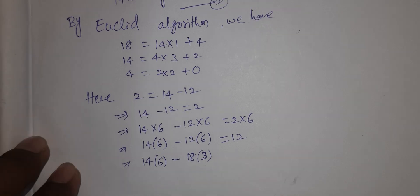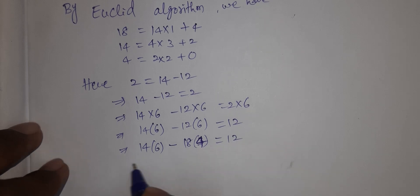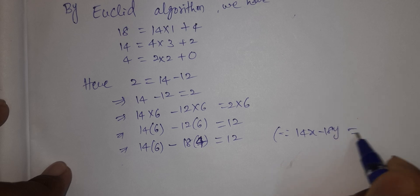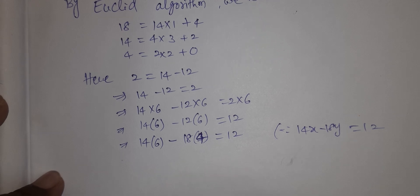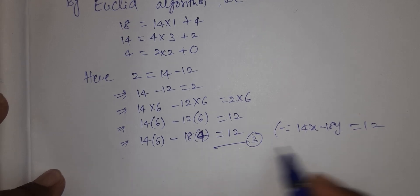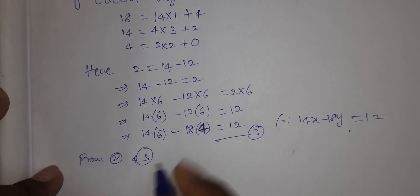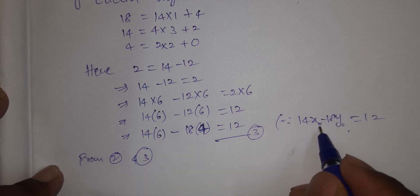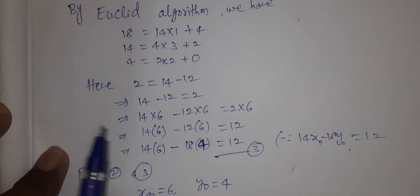Comparing to equation 2: 14x − 18y = 12. From equation 2 and 3, we get x₀ = 6 and y₀ = 4.